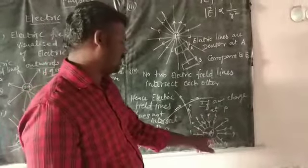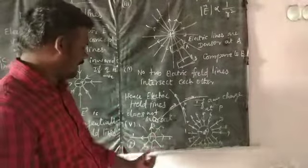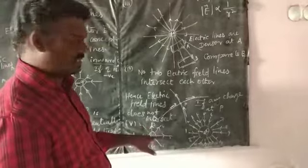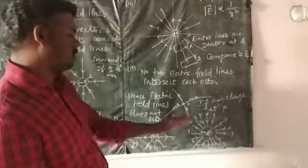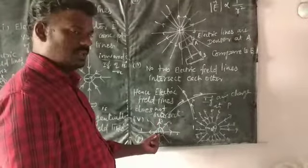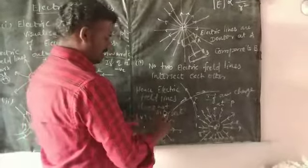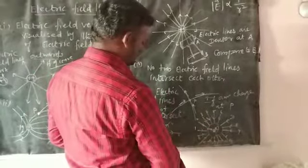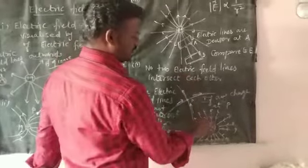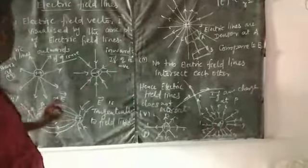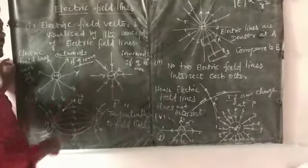So, 16 lines of force emanate from the minus 2Q charge acting in the inward direction. The electric field lines act outward from positive charges. The number of lines from minus 2Q is 2 times that of plus Q. Electric field lines act outward from positive charges and inward toward negative charges.